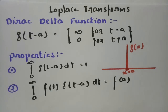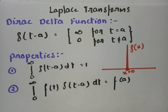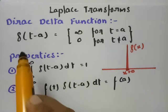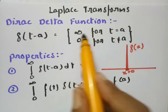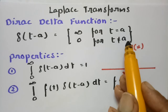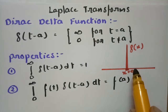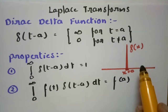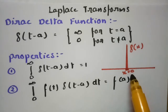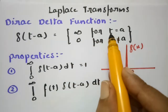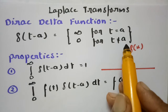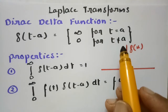Today's video is on the Dirac delta function and we are going to see the Laplace transform of the Dirac delta function. The delta of t minus a is defined as infinity for t equal to a, and 0 for t not equal to a. The physical significance is that it can be visualized as a very short impulse. It is mainly used in quantum mechanics.